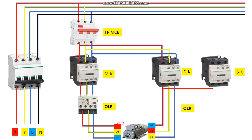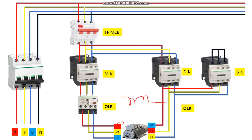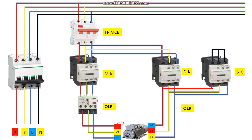For the star connection, take wires from the output of the delta contactor — R, Y, B — and connect them to the input side of the star contactor, then short the output terminals together to form the star point. Always remember: never connect the same phase on both terminals of the same winding. If R is connected at one end, give Y or B at the other end during delta connection.